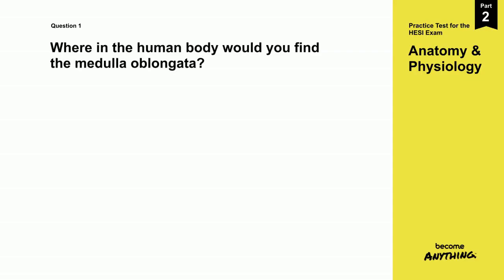Question 1. Where in the human body would you find the medulla oblongata? A. Brain. B. Heart. C. Kidney. D. Liver.